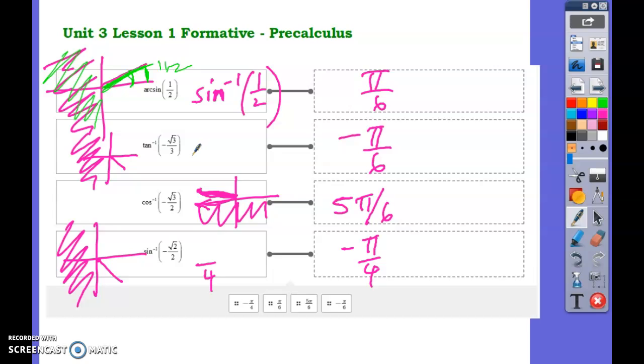For the second one, for the inverse tangent of negative root 3 over 3, you should know that the tangent of pi over 6 is root 3 over 3. If you have that memorized and it's a negative root 3 over 3, you know if you go ahead and restrict your range that it's going to be in the fourth quadrant, which is going to make that negative pi over 6.